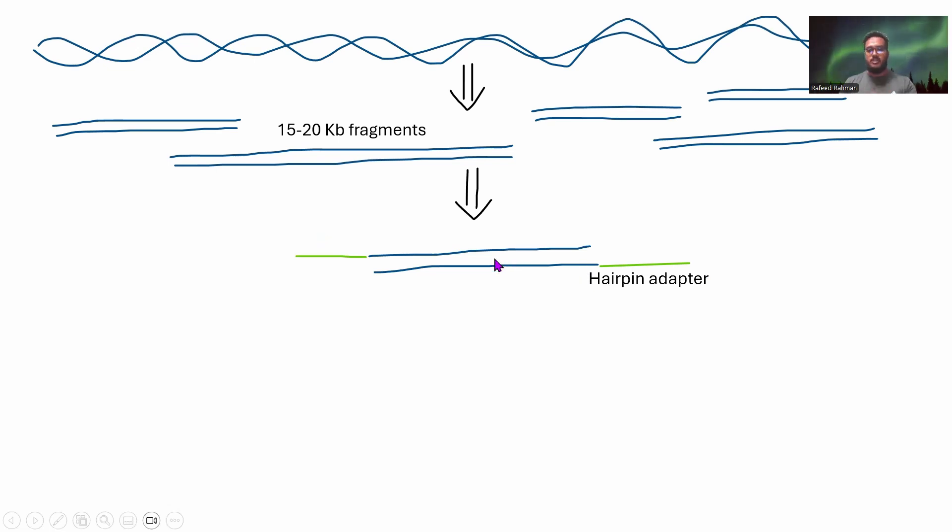What is done here in this technique is an adapter, which is basically a short DNA sequence, is attached to both ends of the complementary strands. This is called a hairpin adapter. Why? Because it can create a loop. If you heat this thing up, if you anneal or heat this thing up, then the double strand will break down into single strands and these two hairpin adapters will loop around this place. They will get stuck to both ends. This adapter will attach to both ends. This is called circular SMRT bell template.